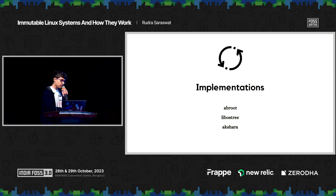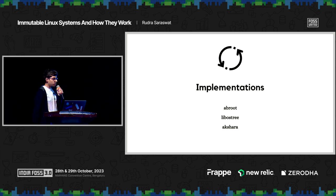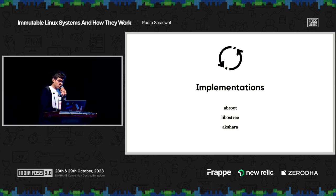As for libOSTree, it is also used by many distributions such as Fedora Silverblue, GNOME OS, and EndlessOS, just to name a few. In the words of the libOSTree team themselves, it is sort of like a VCS — a version control system — but for operating systems. It has commands, except those are just snapshots of the file system tree. Similarly, there are references which are akin to branches.